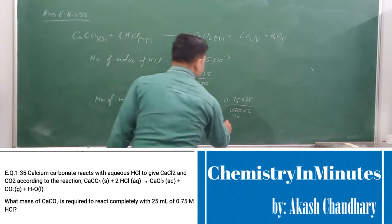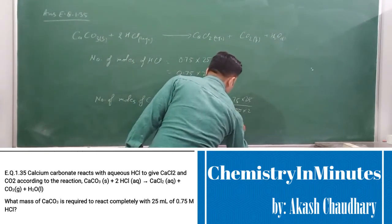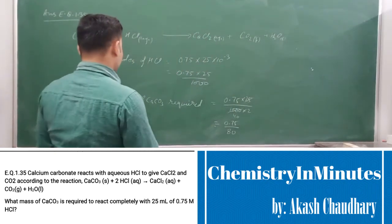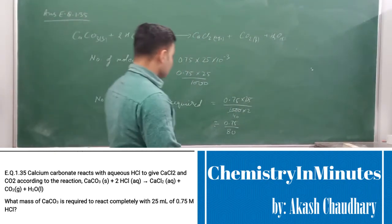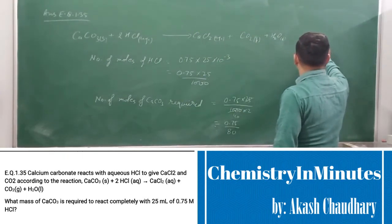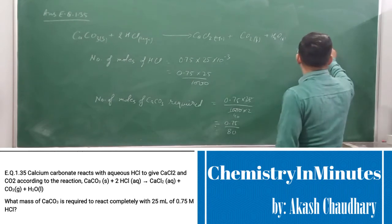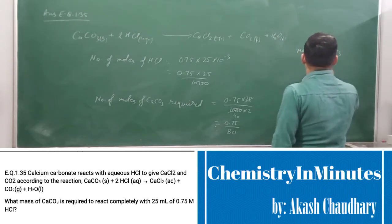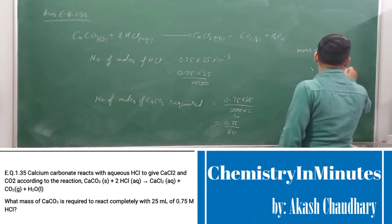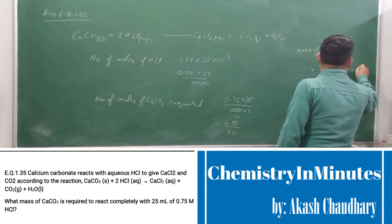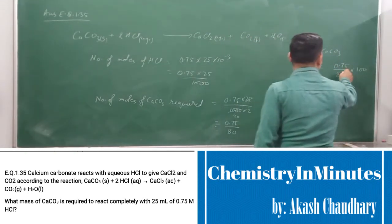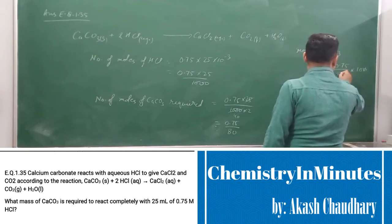Now simplifying, we get 0.75 / 80. Now the mass of CaCO3 will be number of moles, which is 0.75 / 80, times the molar mass, which is 100 grams per mole.